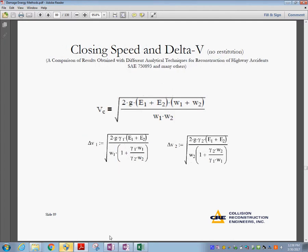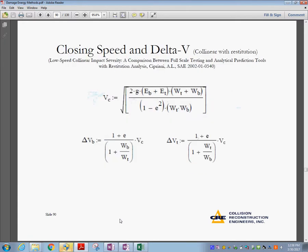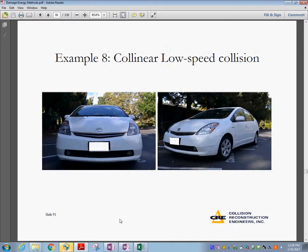Here's the paper also, where you can see SAE 750898-93. So closing speed meaning the velocity prior to the collision. In this case, collinear low-speed collision.